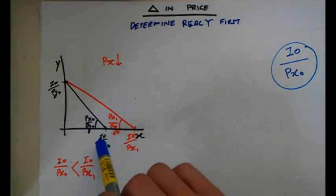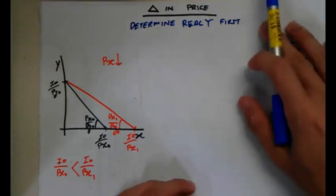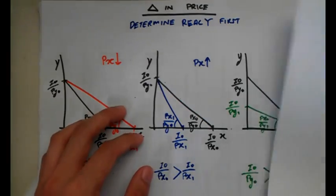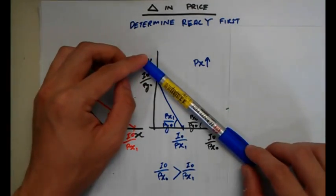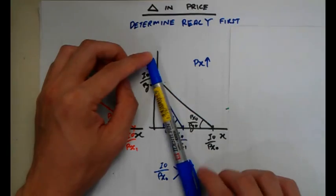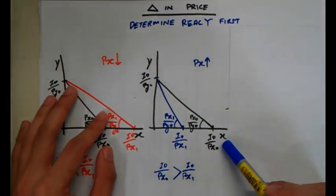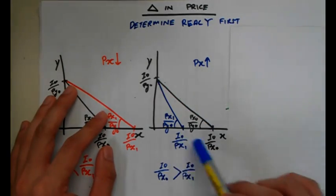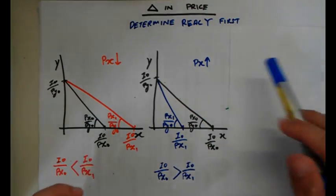Take note of the real income: the real income before the price change is less than the real income after, due to the change in the price of X. If the price of X increases, the budget constraint is going to rotate inwards. In that case, the real income before is bigger than after, because the price of X has increased.